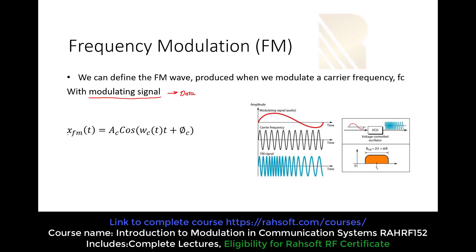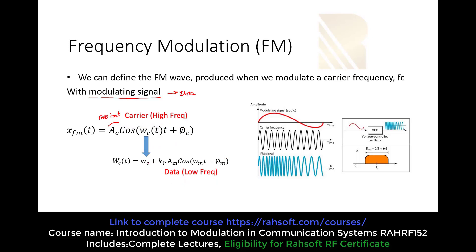The FM signal is written as XFM equals AC cosine of omega_C times t plus phi, and we are not going to touch the amplitude, so the amplitude is constant. The frequency is what changes. Data has a low frequency, and for this example we assume that data is a cosine wave with angular frequency omega_M, an initial phase, and amplitude AM which is constant.